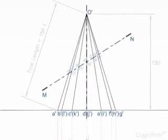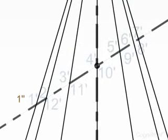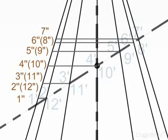In the front view, project point 1 dash onto the slant edge O dash A dash to get the point 1 double dash. Similarly, project points from MN to the slant edge O dash A dash and mark the points.